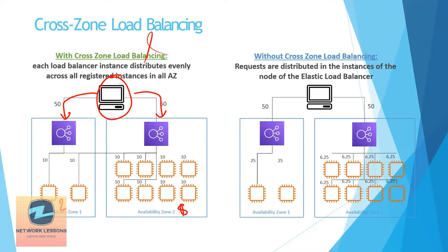Even though at the zone level the load distribution is 50-50, the ALB will actually distribute the load across all EC2 instances across both AZs. So you can see 10% going to each instance — even though the ALB received 50% for that zone, it is only forwarding 10% to each instance, and similarly 10% to each instance in the next AZ as well.